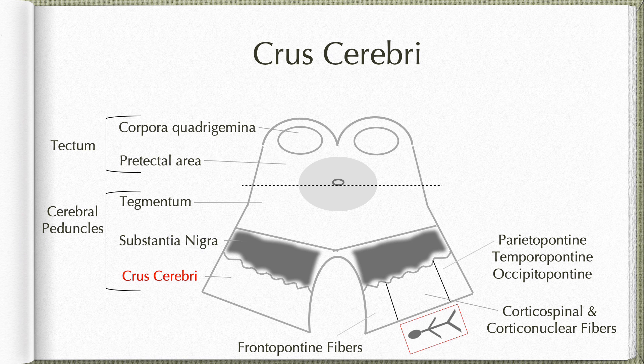The medial one-sixth of the crus cerebri is occupied by the frontopontine fibers, and the lateral sixth is occupied by the parieto-pontine, temporo-pontine and the occipito-pontine fibers. These two sets of fibers belong to the corticopontocerebellar pathway. All these fibers in the crus cerebri will descend to the basilar pons where the fibers of the corticopontocerebellar pathway will relay in the pontine nuclei. The corticospinal fibers will descend through the basilar pons to reach the medulla to form the pyramids. Corticonuclear fibers will relay in nuclei within the midbrain, pons, and medulla.